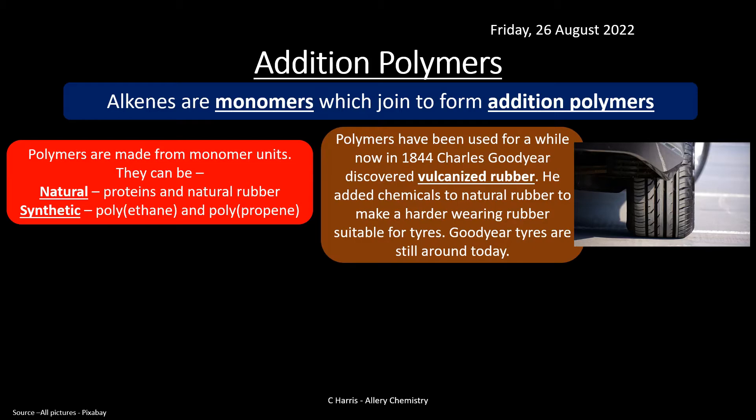Polymers have actually been used for a while. One of the first polymers discovered and still used today is from 1844 — a chap called Charles Goodyear discovered vulcanized rubber. He added chemicals to natural rubber, which was quite brittle and didn't have good properties, and made harder-wearing rubber for tires. They're still around today — you might have heard of Goodyear Tires — and it was thanks to him that we discovered you could create synthetic polymers.